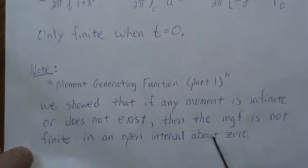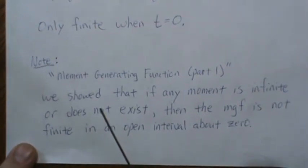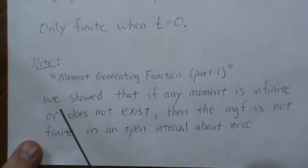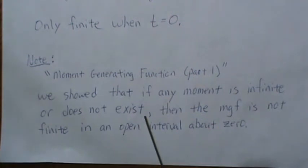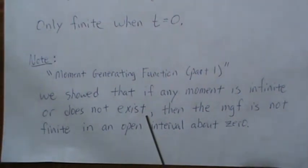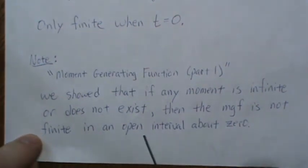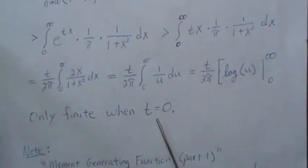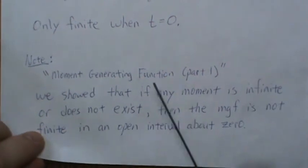Here's a note: we showed in the video Moment Generating Function Part 1 that if any moment is infinite or does not exist - and we know the first moment of a Cauchy does not exist - that implies the moment generating function is not finite in any open interval about zero. We kind of knew we were going to get this - it's only finite at zero, no open interval about t, because of this theorem.